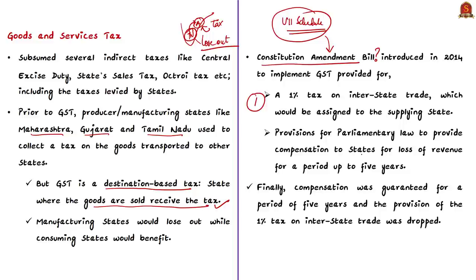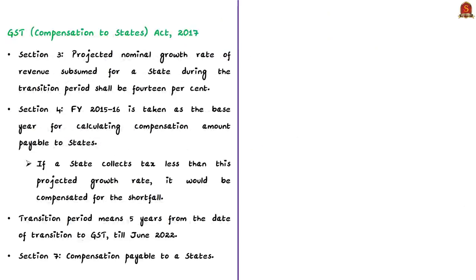The compensation was guaranteed for five years in the parliamentary law, and the provision of one percent tax on interstate trade was later removed. Thus the GST Act 2017 came into being. According to this act, the projected nominal growth rate of revenue during the transition period shall be 14 percent. Section 4 of this act takes 2015-16 as the base year for calculating the compensation amount payable to the states.